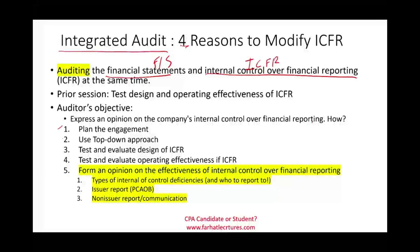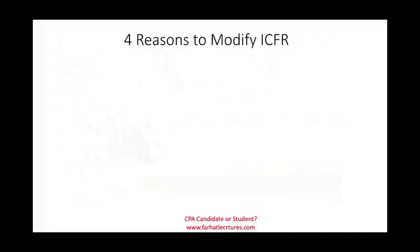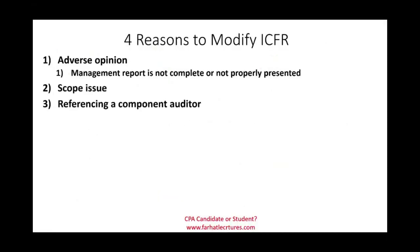In the prior session we looked at the steps: we issued the report, planned the engagement using a top-down approach, tested and evaluated the design, tested and evaluated the operating effectiveness, then we looked at the types of internal control deficiencies, then the issuer report and non-issuer report, and we looked at a clean opinion. In this session we're going to look at reports where we need to modify the report, and I summarize this into four reasons.